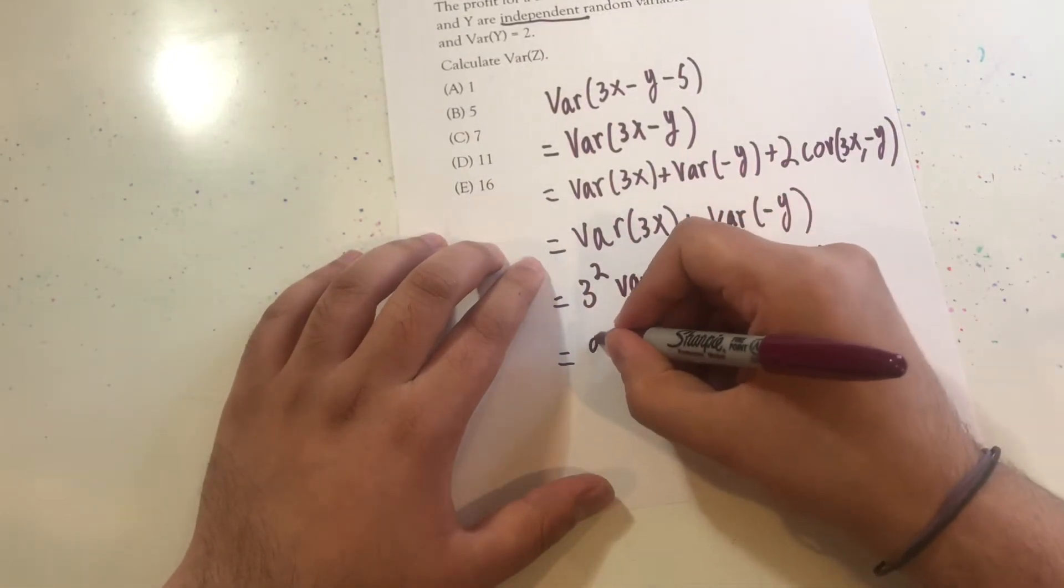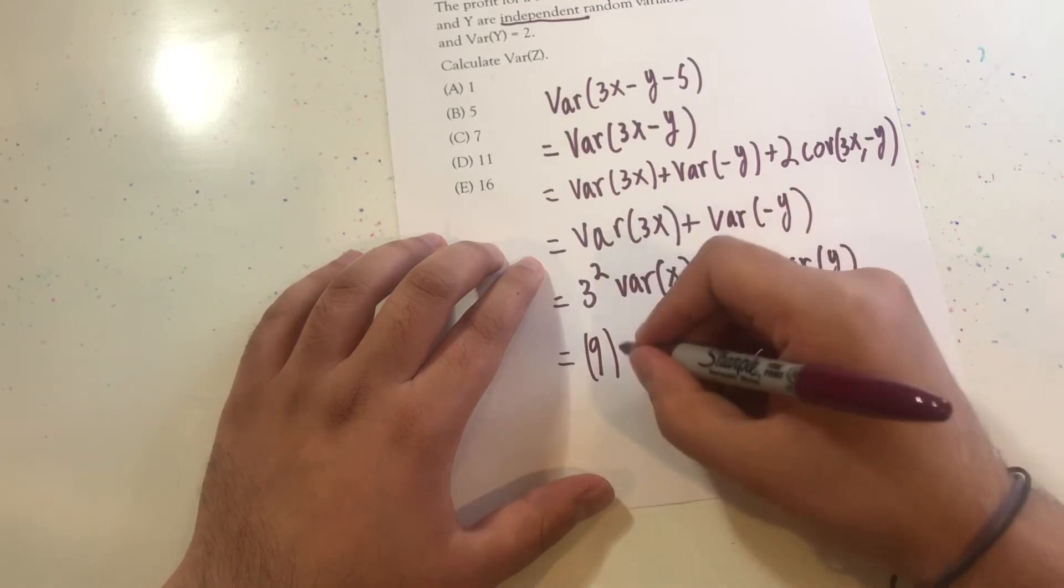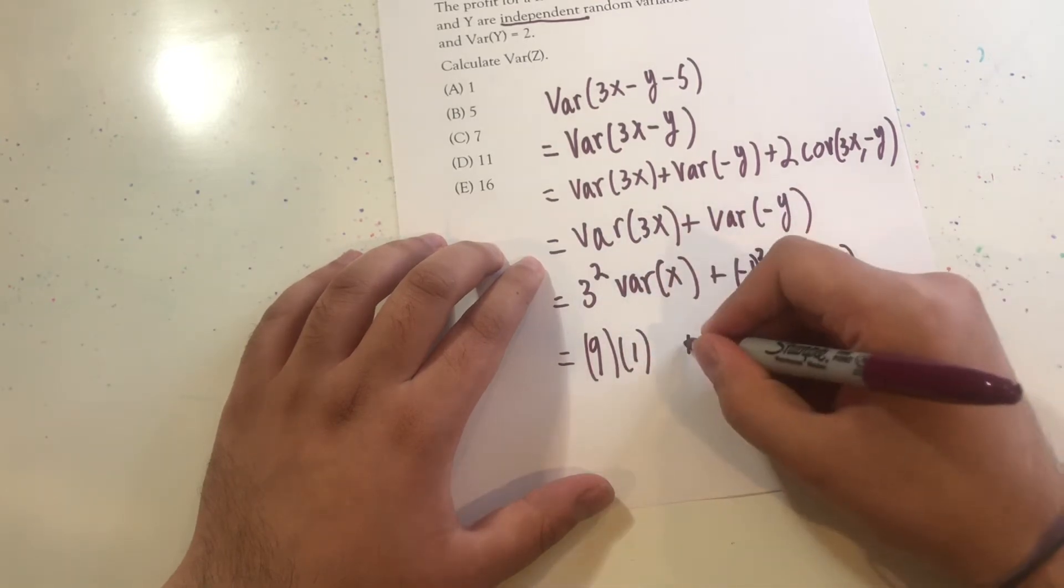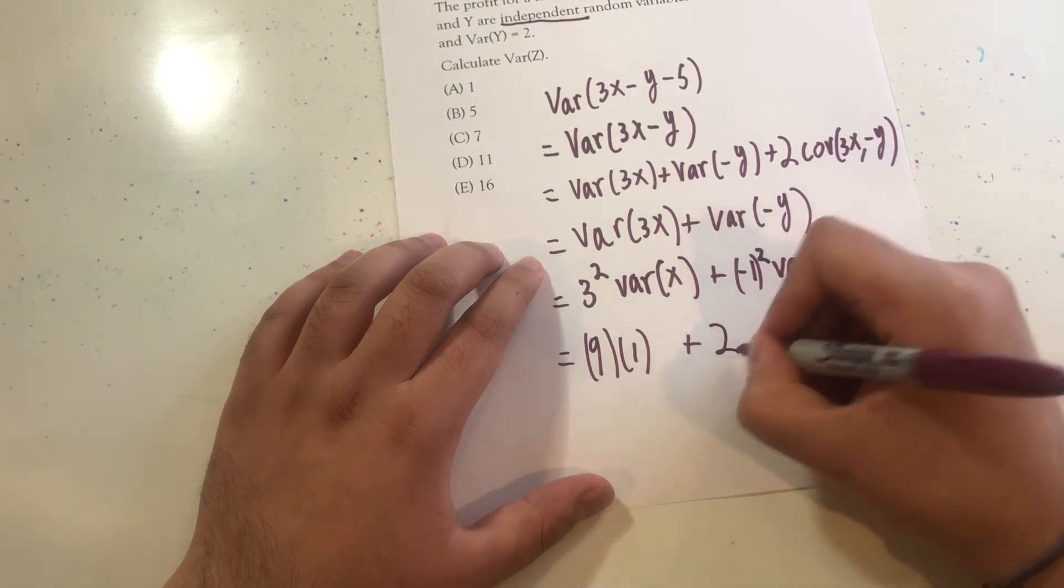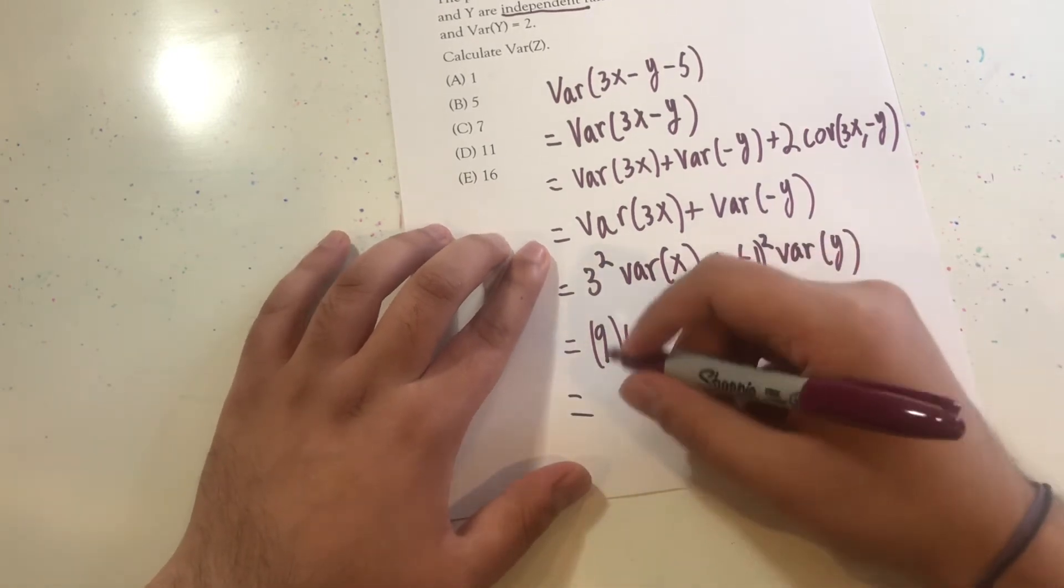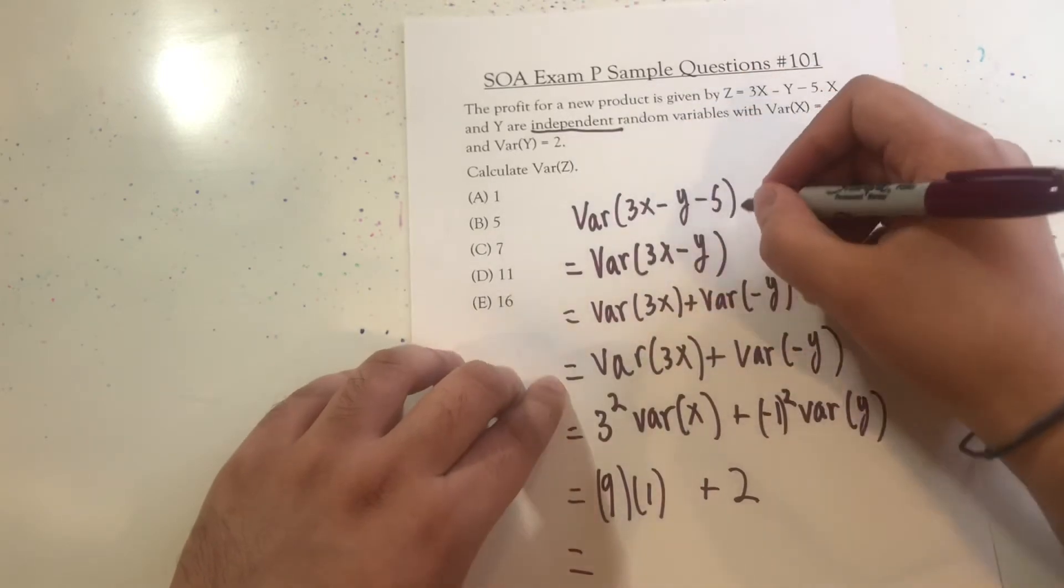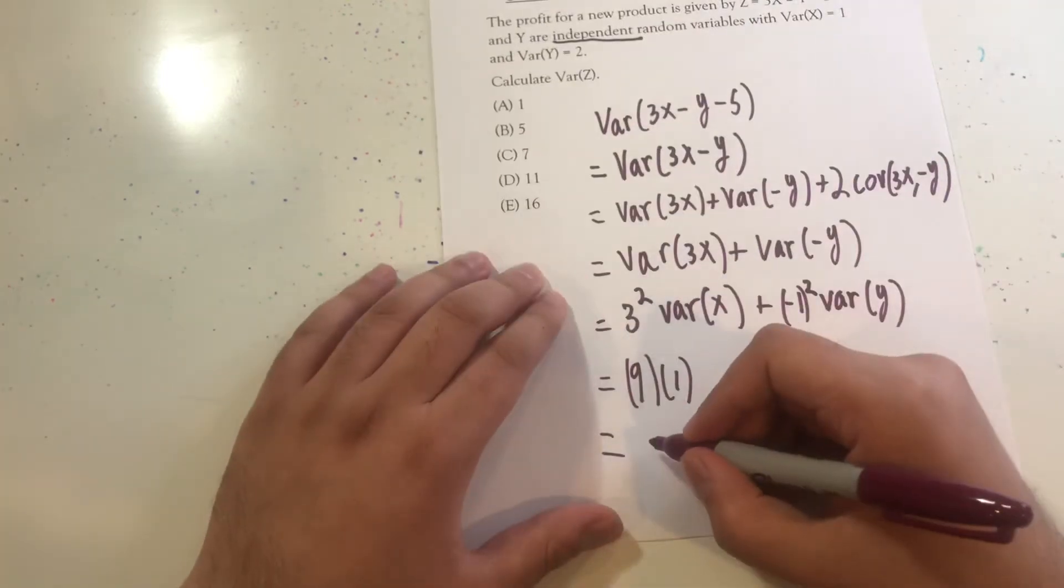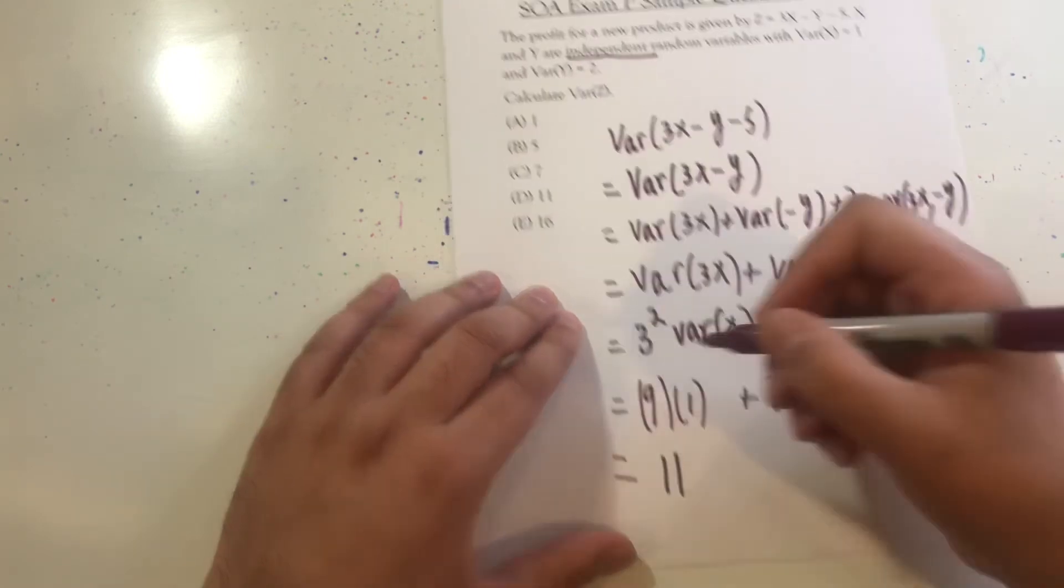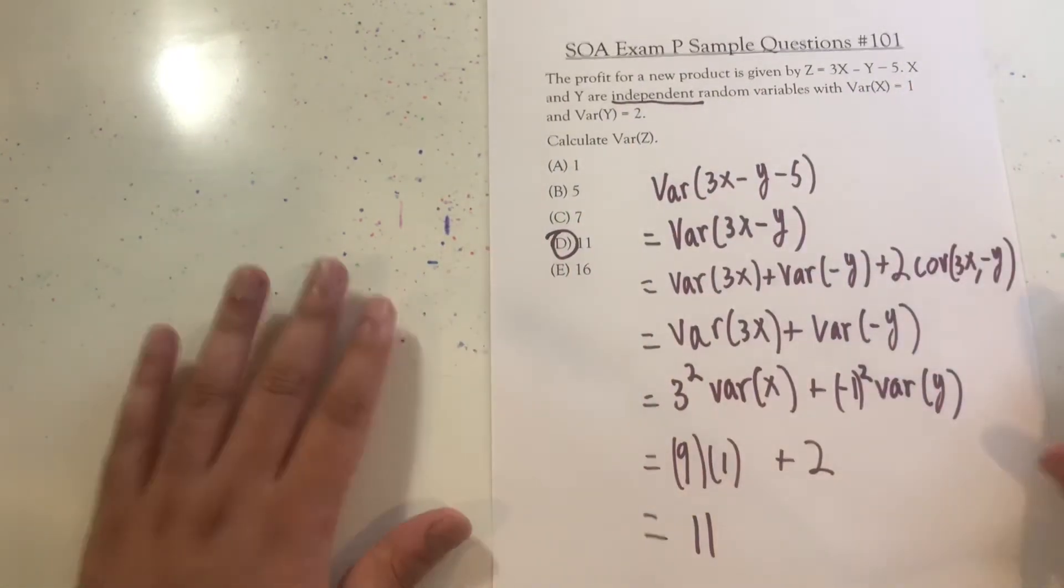Obviously, 3 squared is 9. Variance of X is just 1. Plus, negative 1 squared is just 1. The variance of Y is 2. We're left with the variance of 3X minus Y minus 5, or the variance of Z, to just simply be 11, which is answer choice D.